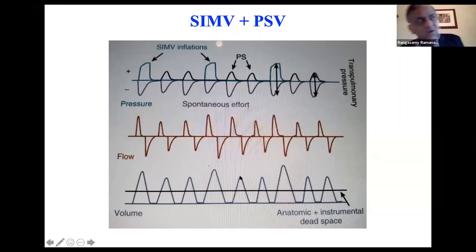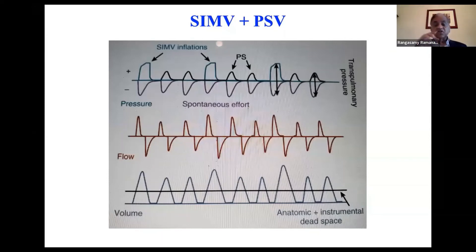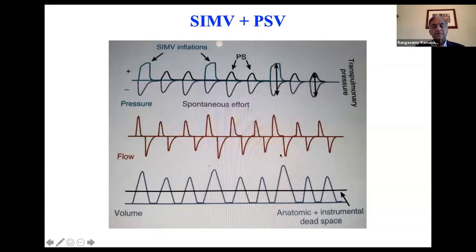Generally you don't want to set less than 10, especially in smaller babies, because the resistance is higher with a small endotracheal tube. Pressure support augments the baby's spontaneous respiratory effort and achieves a much larger tidal volume, so babies can ventilate easily when you add pressure support.